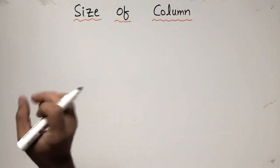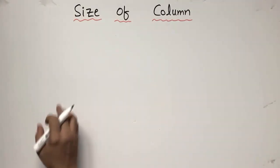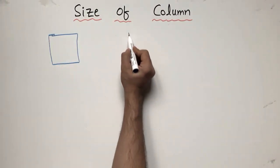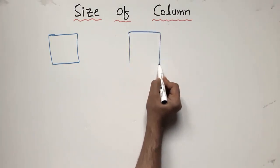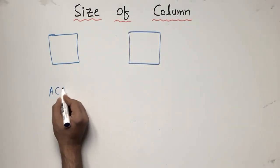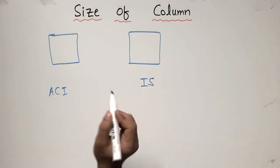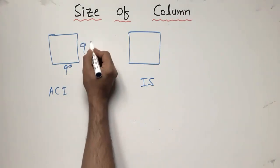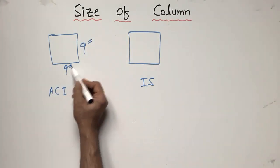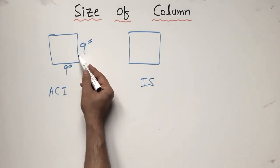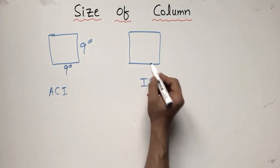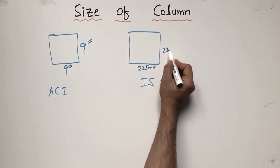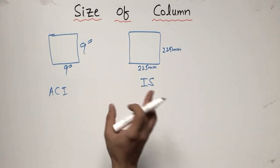Starting with the minimum dimension of the column: the minimum dimension recommended by the American Concrete Institute (ACI) and the Indian Standard is 9 inches by 9 inches — a square column of 9 inches should be the minimum dimension of an RC column. According to the Indian Standard, the minimum size of the column is 225 mm by 225 mm. You cannot design your column smaller than these dimensions.